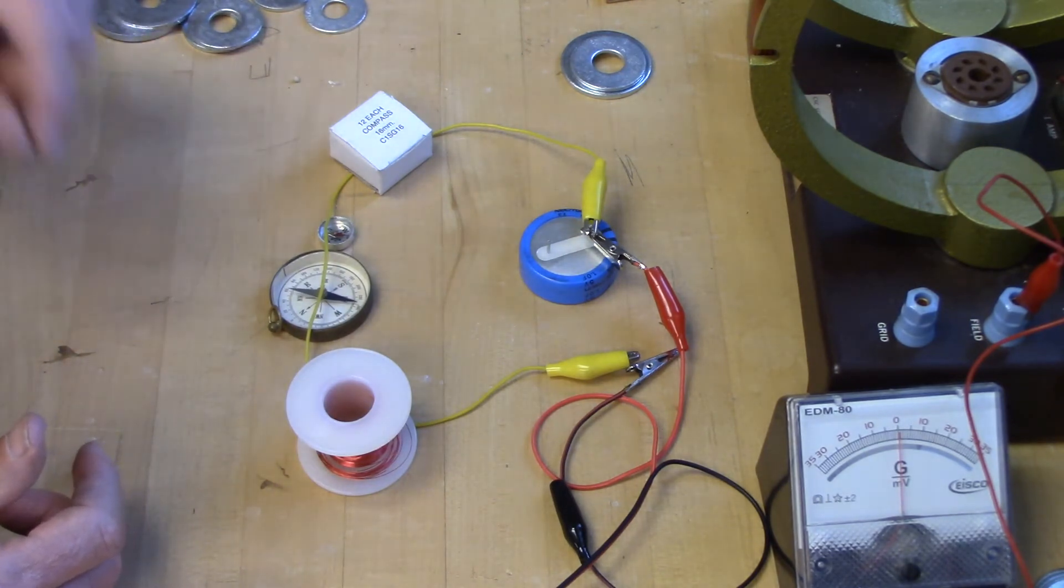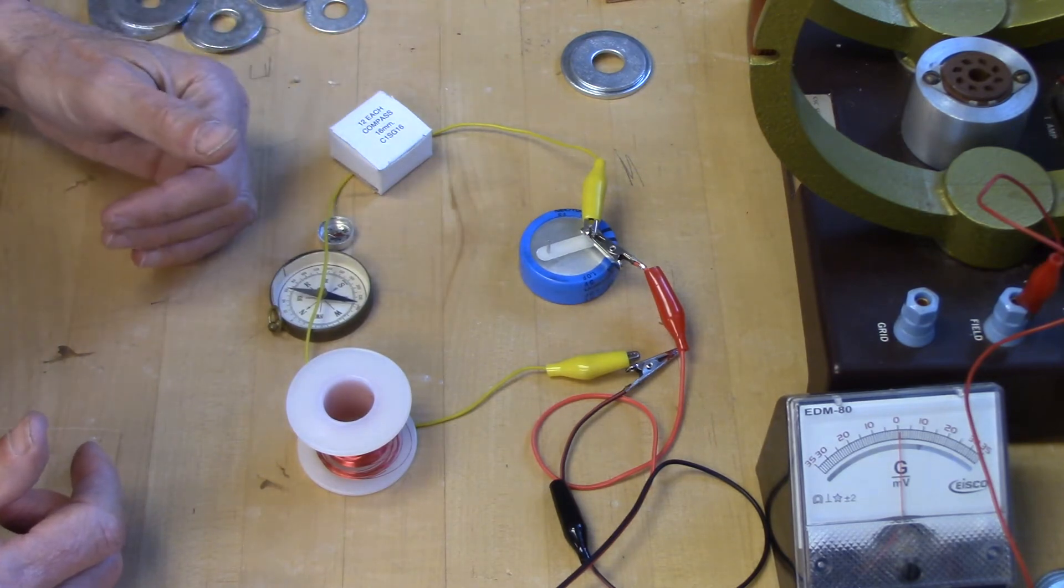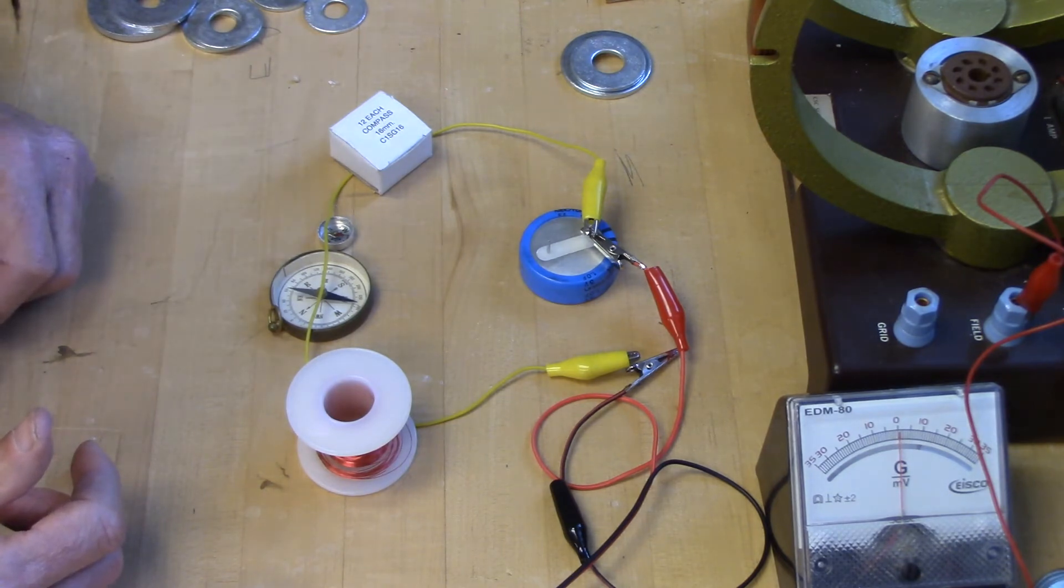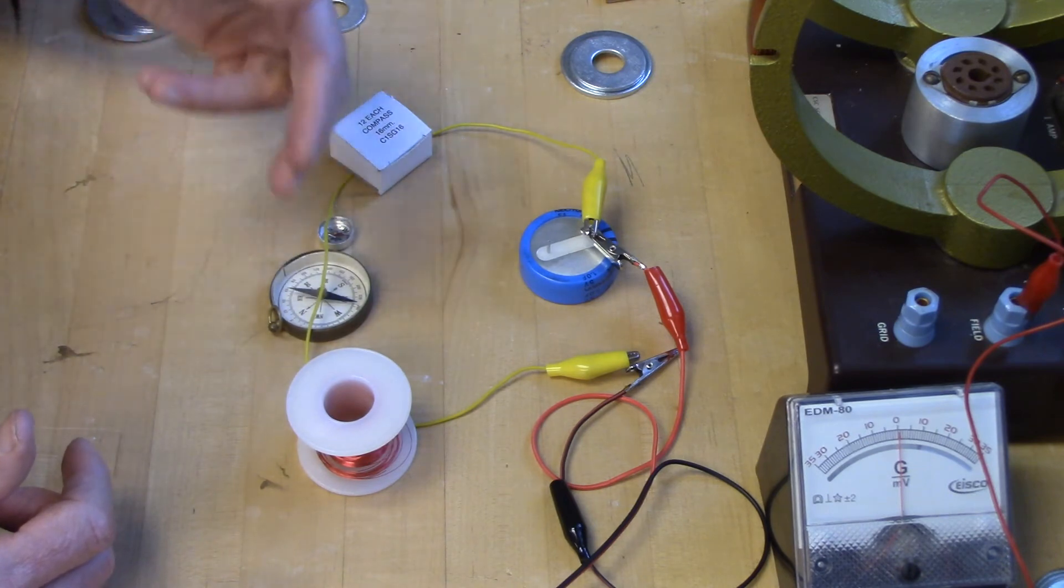So we see that a current in the wire creates a—it turns out—I said the current in the wire. The current in the wire creates a magnetic field in its vicinity.